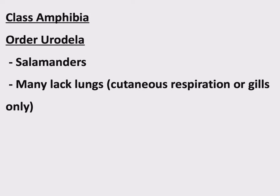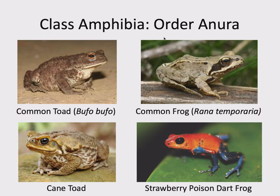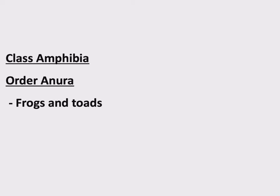That's all for Order Urodela. Another order is Order Anura — 'A' means without and 'nura' means tail, so no tail. That's frogs and toads. Traditionally, toads have rougher skin and live in drier environments, and frogs have smoother skin and more aquatic lifestyles, though that's not strictly true. Just know that Order Anura means frogs and toads.